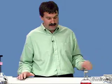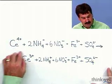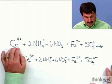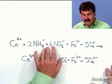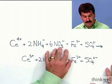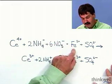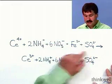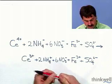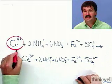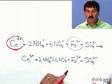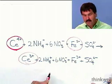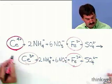If I break that into its constituent ions, we have cerium-4, ammoniums—two ammonium ions—six nitrate ions coming from the ceric ammonium nitrate, and then iron and sulfate ions. The crucial thing going on here is going to be a reaction of ceric-4, cerium-4, and iron-2 to give us cerium-3 and iron-3. Look what's going on.